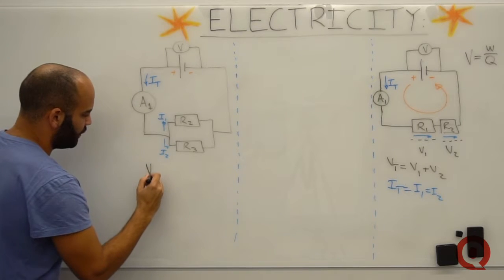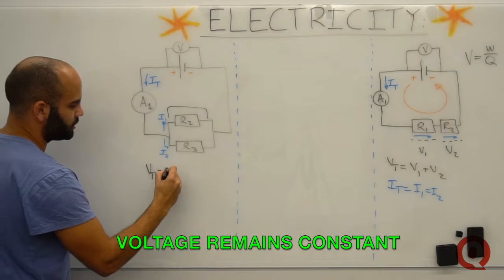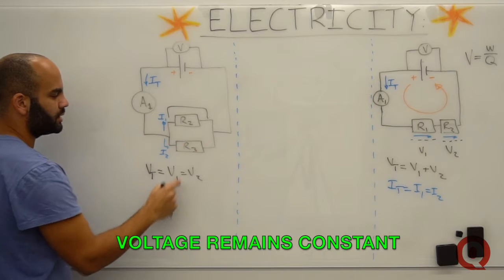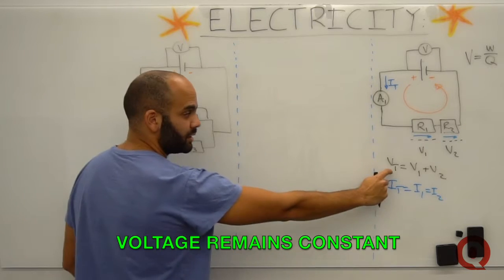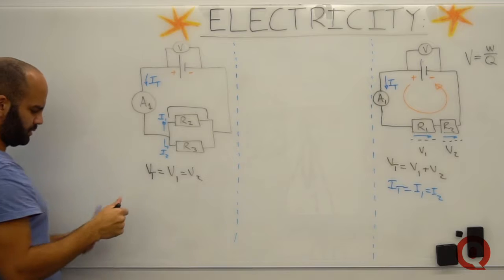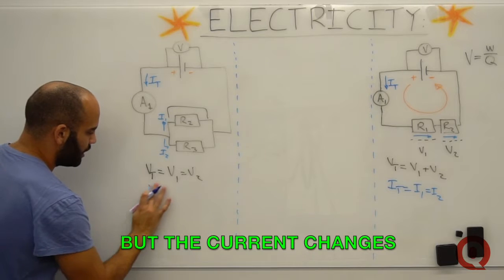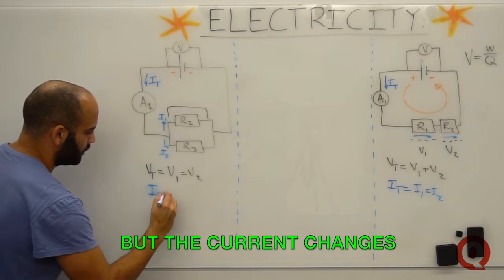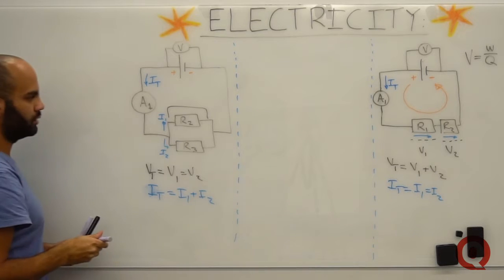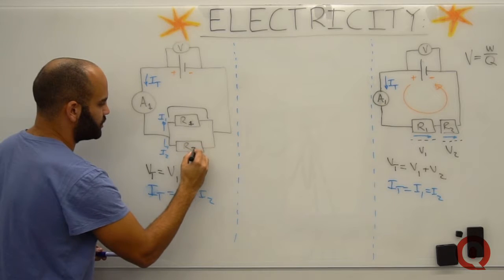So what happens in a parallel circuit? I know that the voltage, V total, is equal to the voltage across the parallel circuit. V1 equal to V2. Because in a parallel circuit it doesn't divide. Whereas in a series circuit it does, because I drop energy across each resistor that is in sequence. But in a parallel circuit, my current divides. So I total is equal to I1 plus I2.